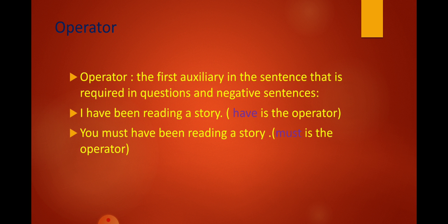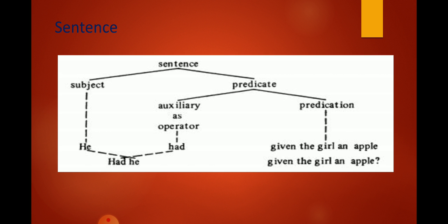The operator should be an auxiliary, but not all auxiliaries are operators. To summarize our classification of a sentence: the sentence is classified into a subject and a predicate. The subject is the theme or topic of the sentence, and the predicate is what is said about this topic. The predicate is further classified into an auxiliary as operator — which we require especially in interrogative and negative sentences — and a predication, which is the rest of what is said about the subject.